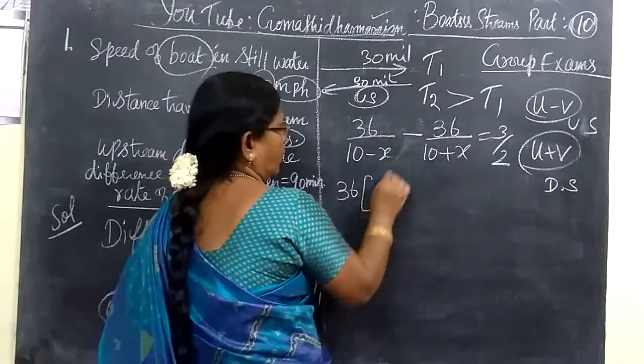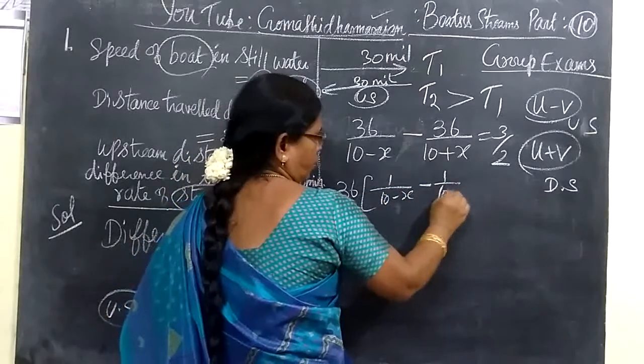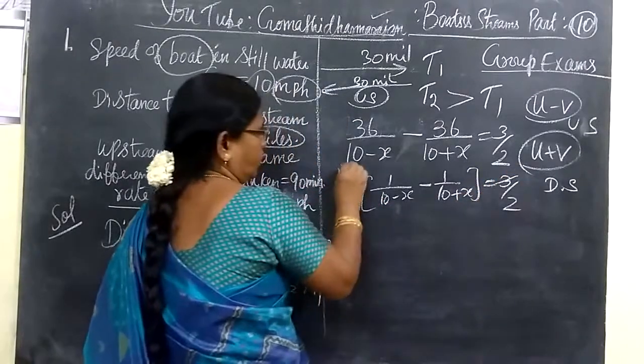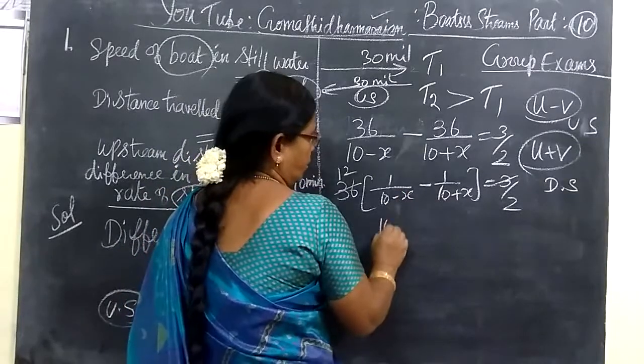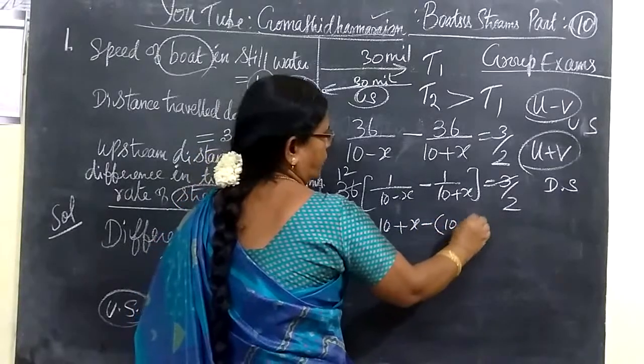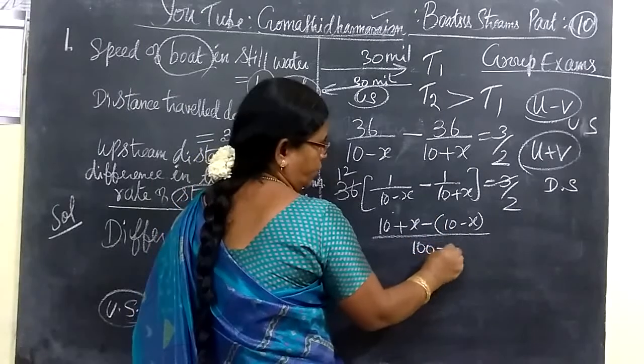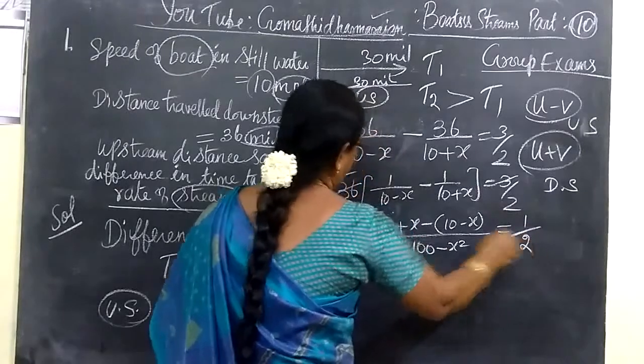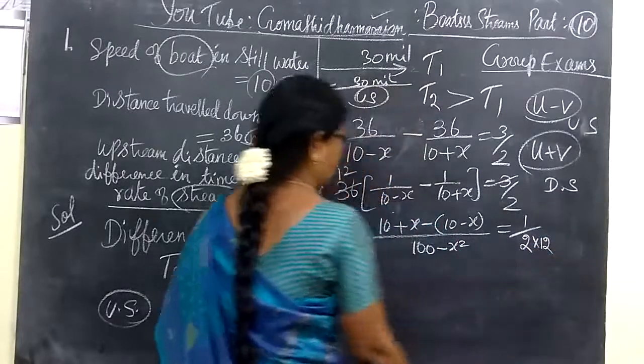So, that equals 36 times 1 by 10 minus X minus 1 by 10 plus X equals 3 by 2. Cancel 36. Now, you can cross multiply. 10 plus X minus 10 minus X equals 2X. This equals 3 by 2.